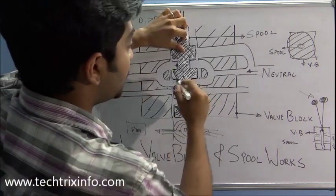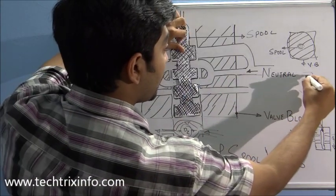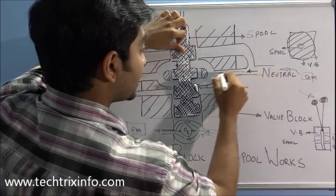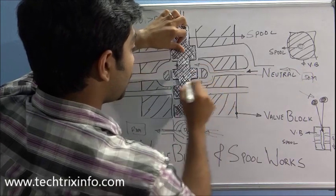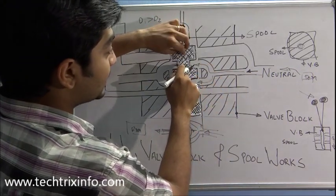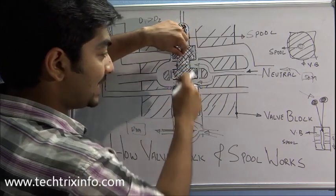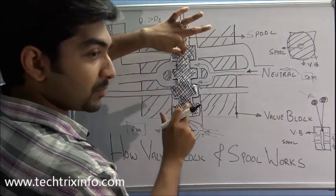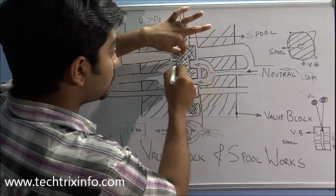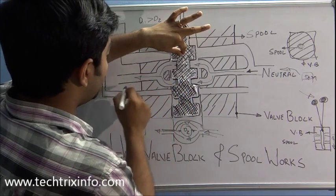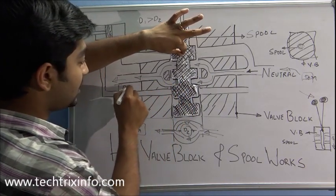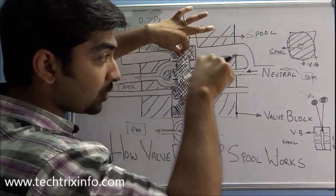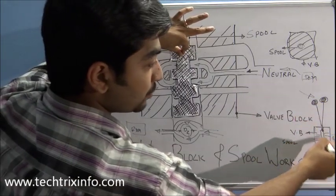Currently this is a neutral gallery. The flow coming from the hydraulic pump comes in and at this position D2 — the lesser diameter area — is selected. This means the operator is not holding or moving the lever. In the neutral position, the flow routes through the sides of D2 and goes towards the tank. So in neutral, the oil returns to the hydraulic tank.